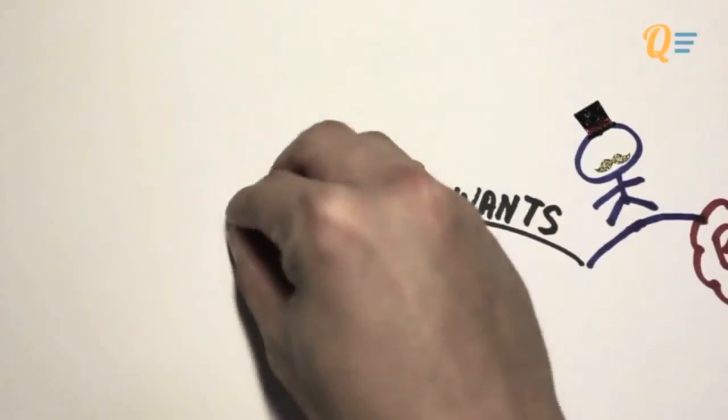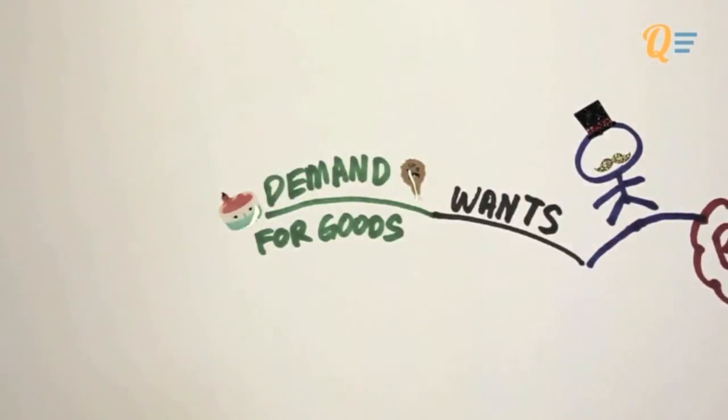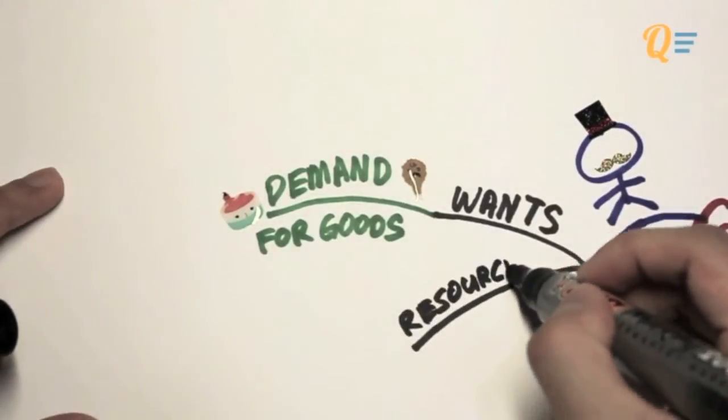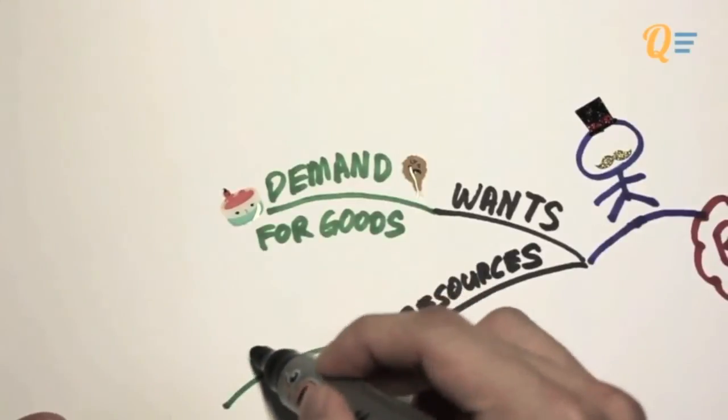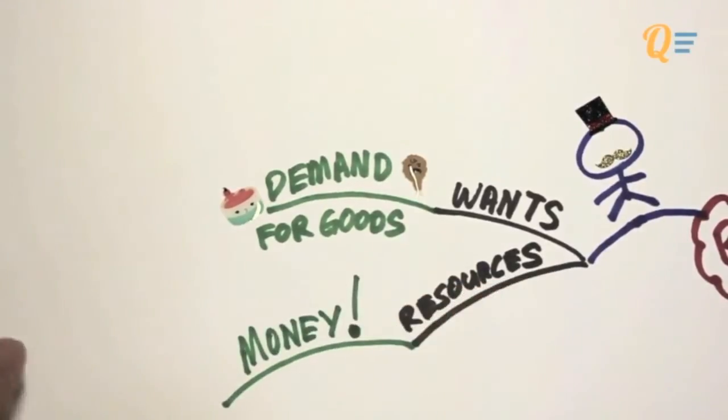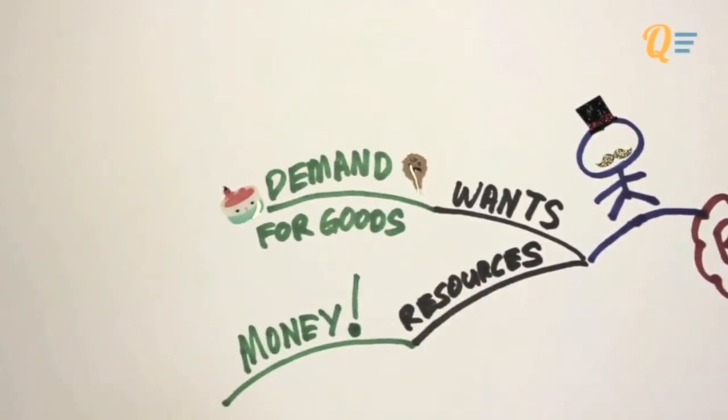You've got food like drumsticks and ice cream, services like haircuts and massages. In order to achieve these wants, this individual needs resources. And when we talk about consumers, typically, the resources would be money for them to buy the goods.